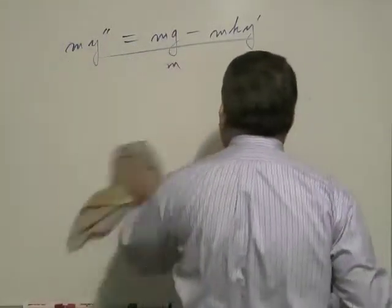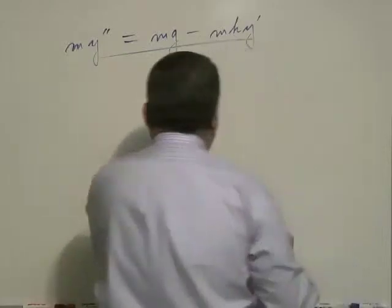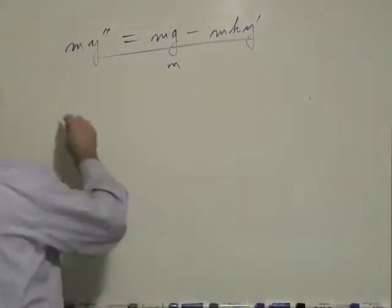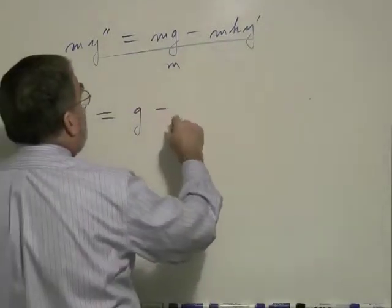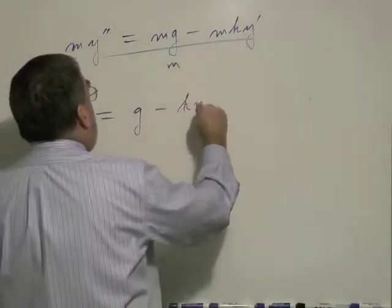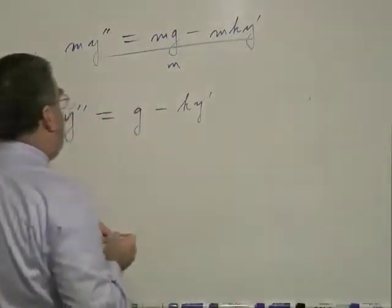And so, here we go. Here's our basic problem. It's solving y double prime equals g minus k y prime.